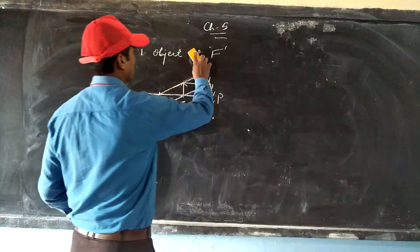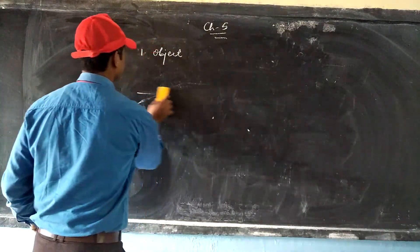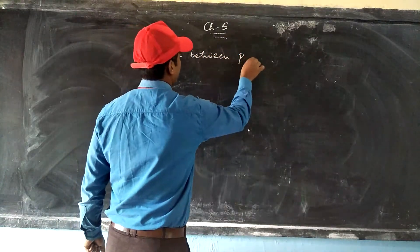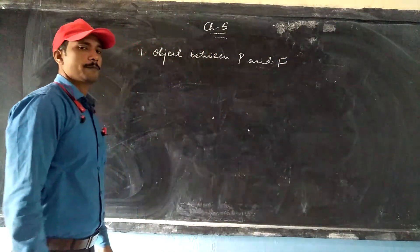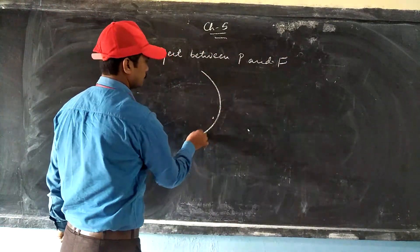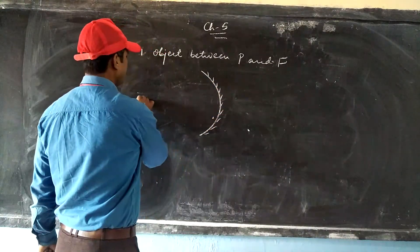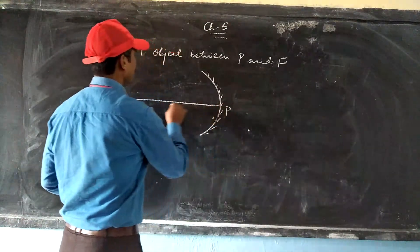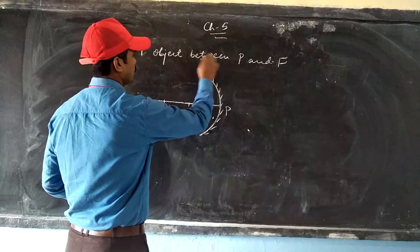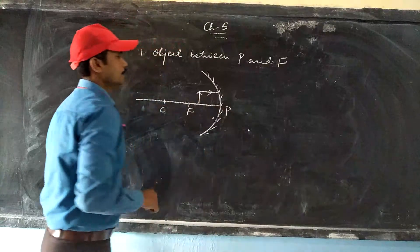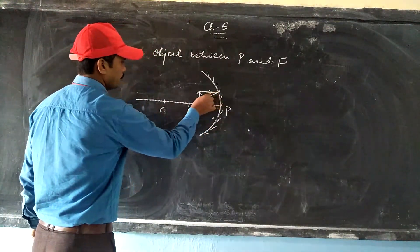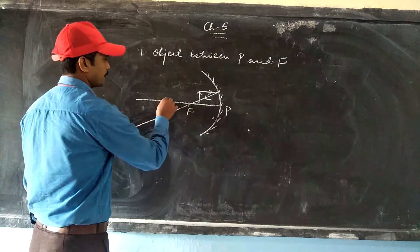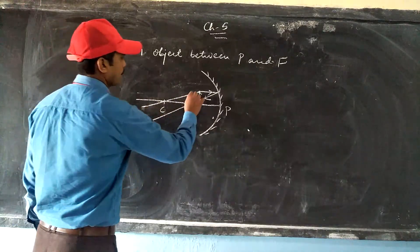The last case for the concave mirror is when the object is placed between the pole and focus of the mirror. We take two rays: one ray parallel to the principal axis, which after reflection will pass through the focus. The second ray passes through the center of curvature, so after reflection it comes back along the same line.